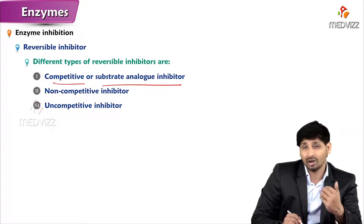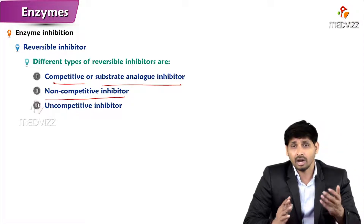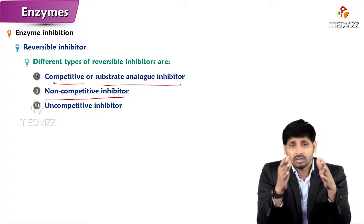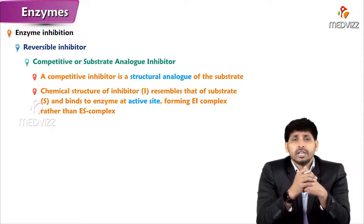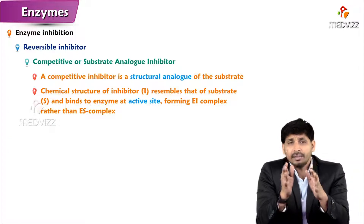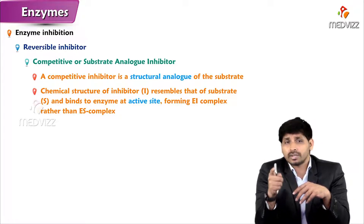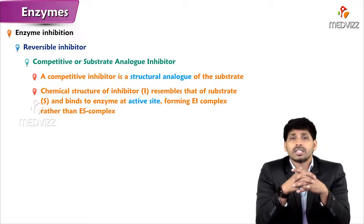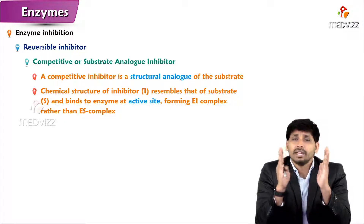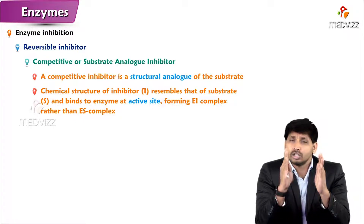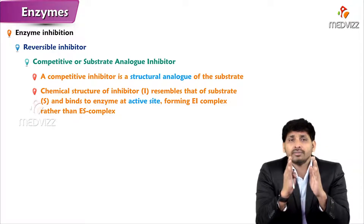Competitive inhibition, also called substrate analog inhibition, involves an inhibitor that is a structural analog of the substrate. The chemical structure of the inhibitor resembles that of the substrate and it binds to the active site of the enzyme. There is a competition between the inhibitor and substrate to bind to the active site of the enzyme.